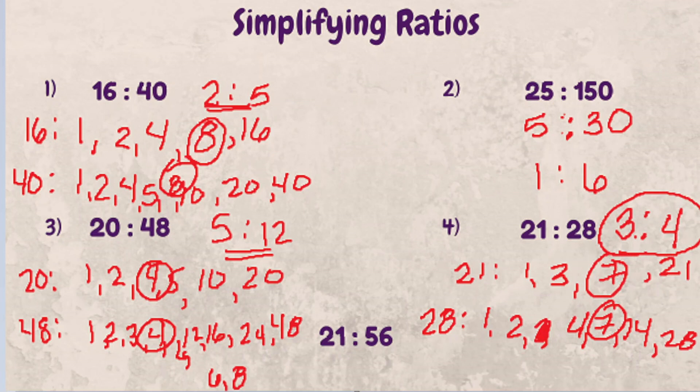So now that we've gone through all this, I want you to try one on your own. Leave your answer in the comments. What is the reduced or simplified ratio of 21 to 56? Good luck!